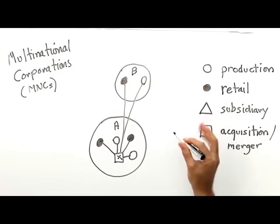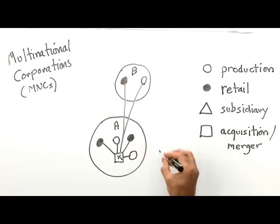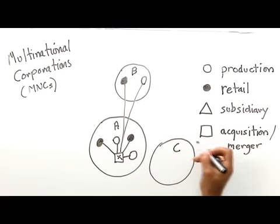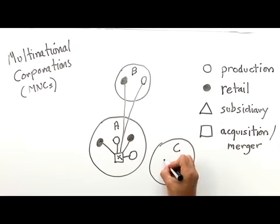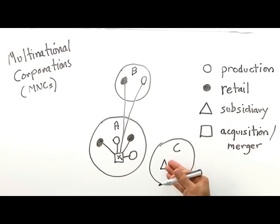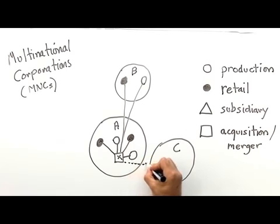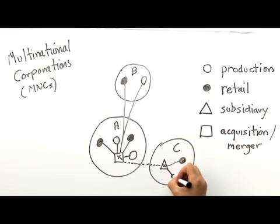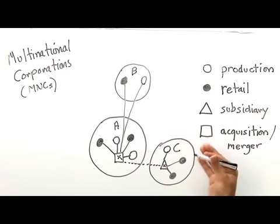Another possibility is Company X may wish to open up operations in State C, and it can do that by actually starting a company, a wholly owned company inside State C. And that is called a subsidiary. So Company X owns this subsidiary, and the subsidiary will have retail outlets and production facilities inside State C.